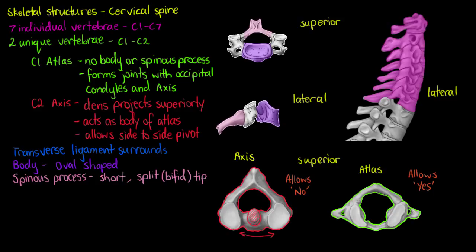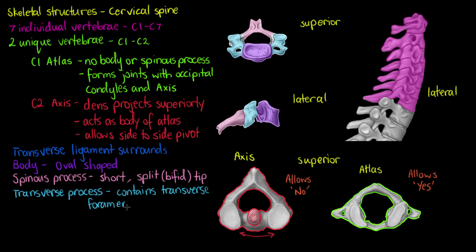Now we can move on to our transverse process, which serves as a point of ligament and tendon attachment, and also has a few unique features in our cervical spine. The first of which is our transverse foramen — I'll just outline those on the transverse process up here in red. The transverse foramen are holes in the transverse process of our cervical vertebrae that allow the passage of the vertebral arteries, which lead to your brain to supply it with blood.